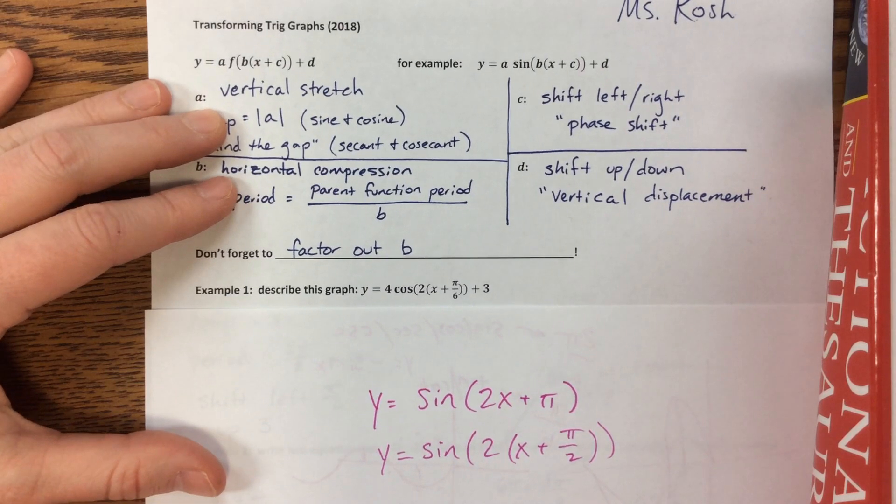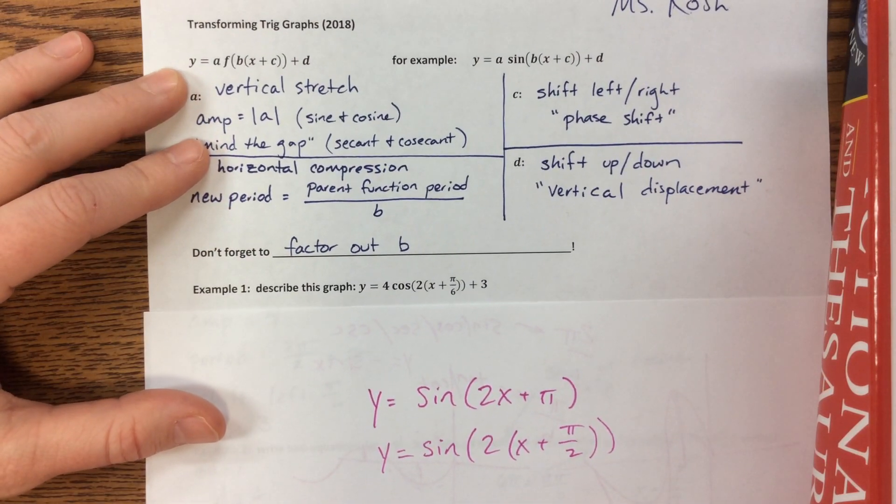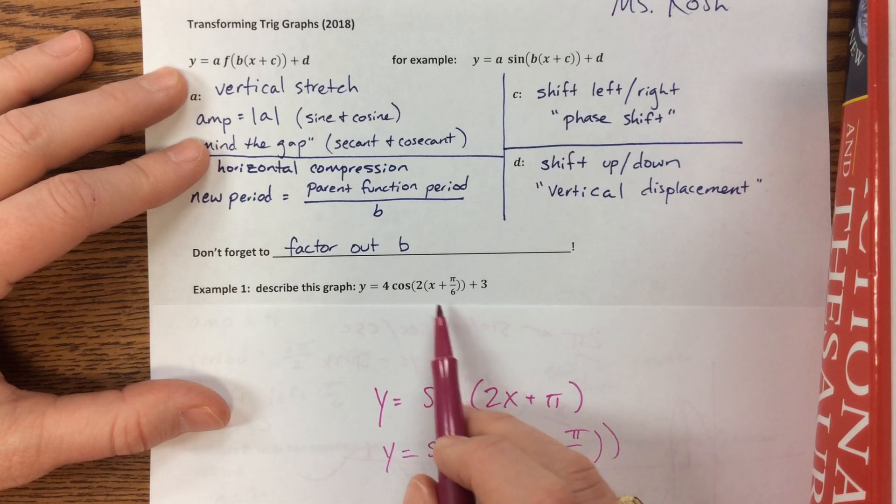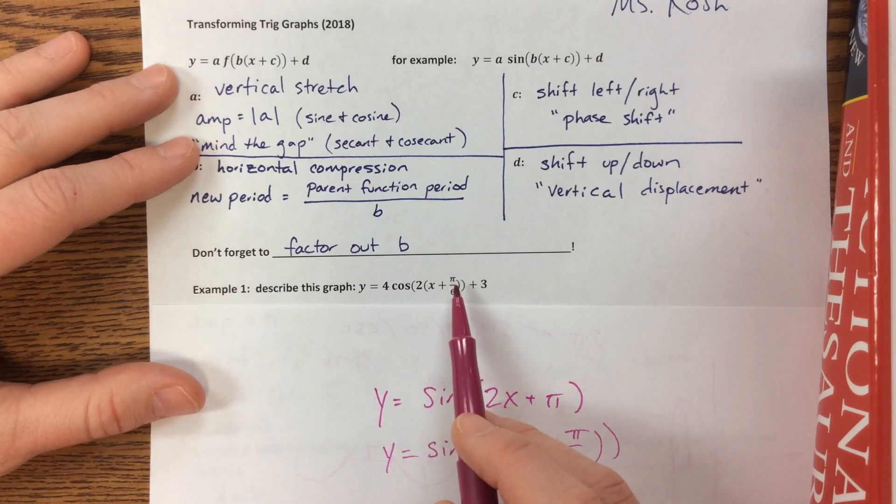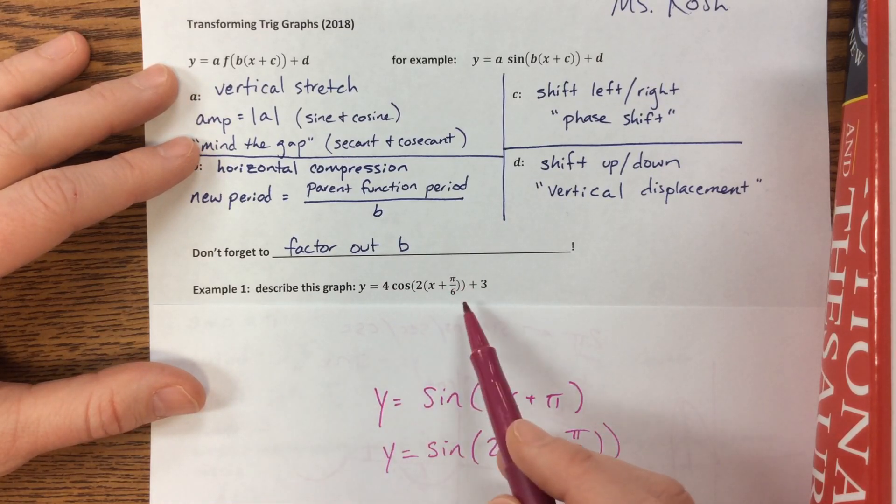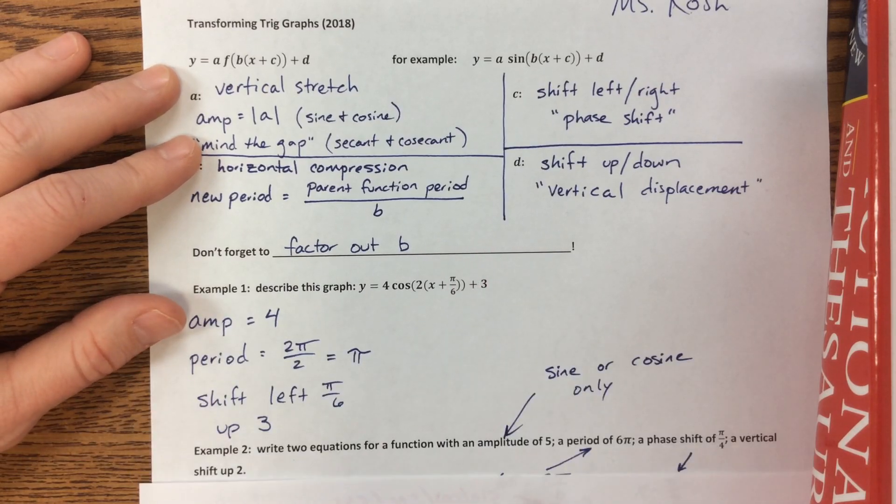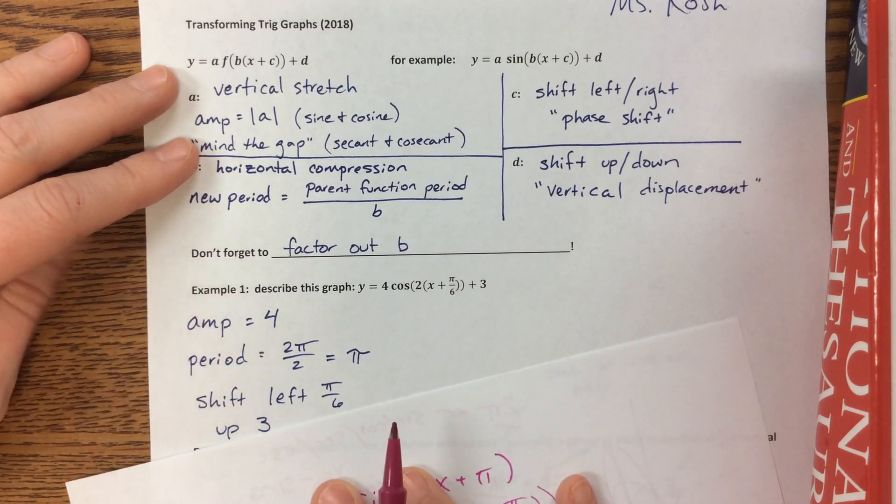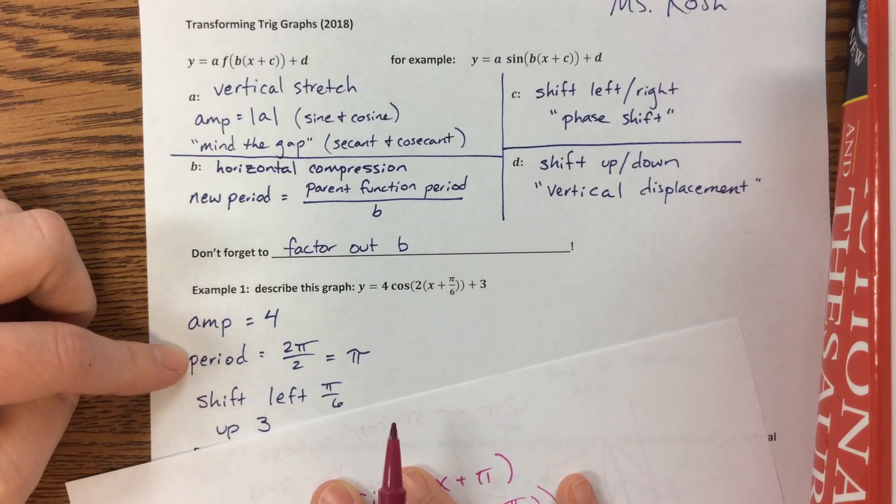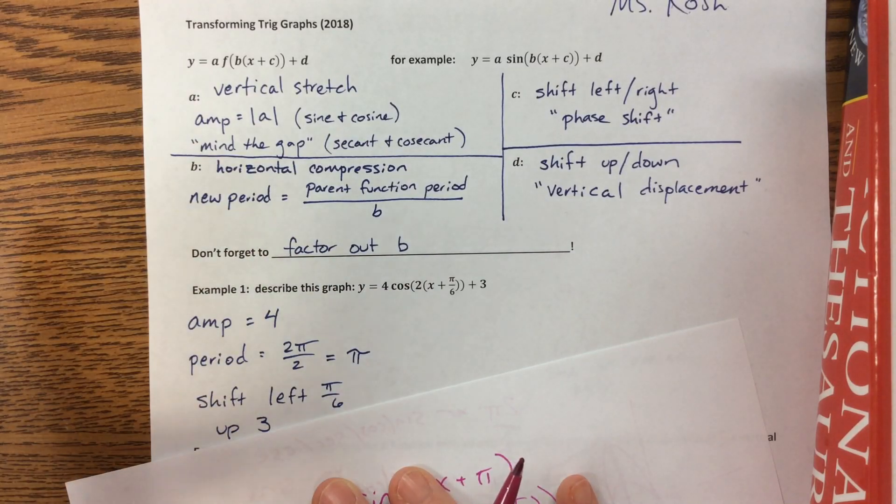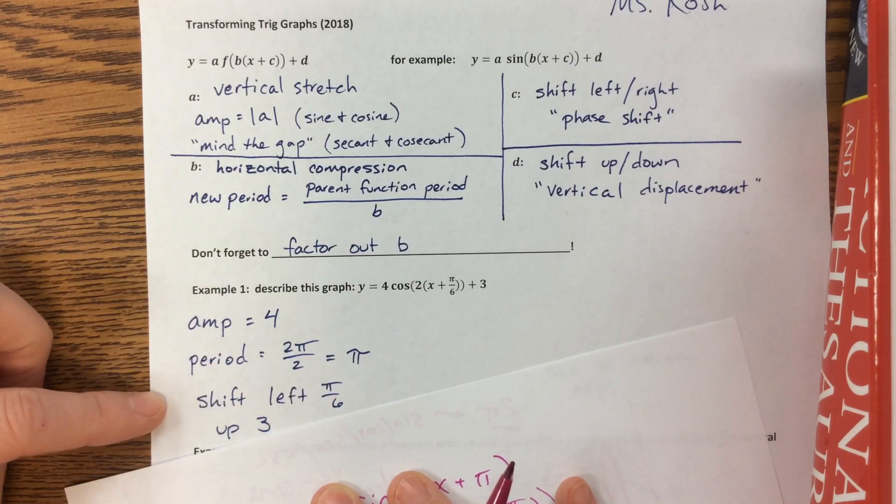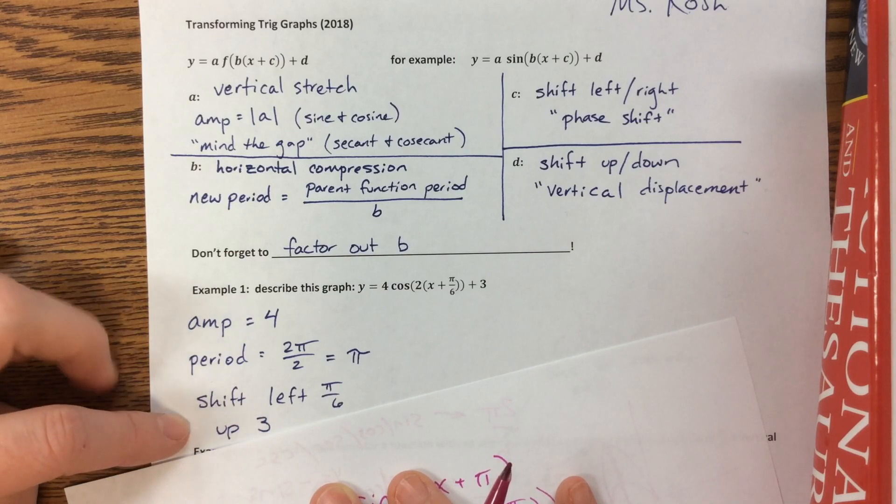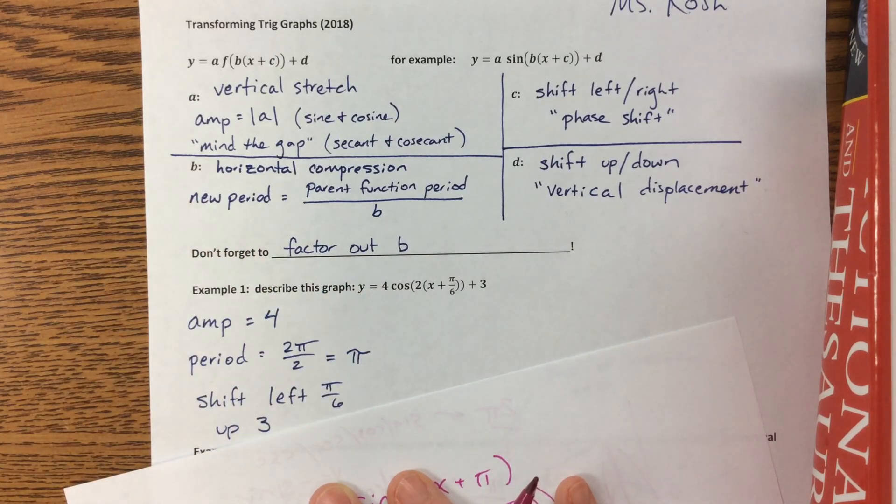The next example, it says describe this graph. 4 cosine of 2 times x plus π over 6 plus 3. 4 impacts the amplitude. 2 impacts the period. π over 6 right here tells us that we're going to move left π over 6, and 3 moves us up. So what we wrote here is that the amplitude is 4. The period is now, it's been compressed by a factor of 2, which means it's 2π over 2, which is π. We're shifting left π over 6 and then up 3. And very soon, you're going to graph something this complicated, but not yet.